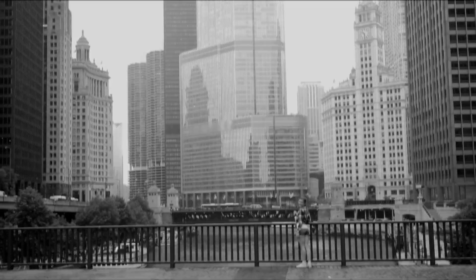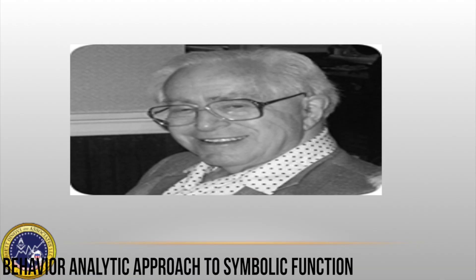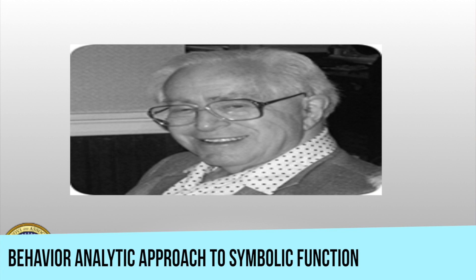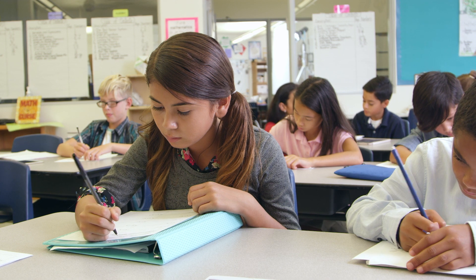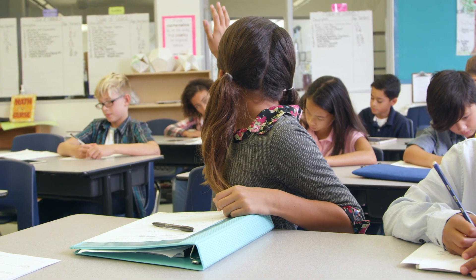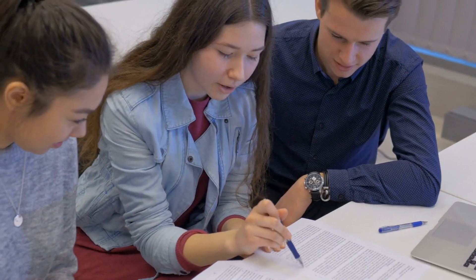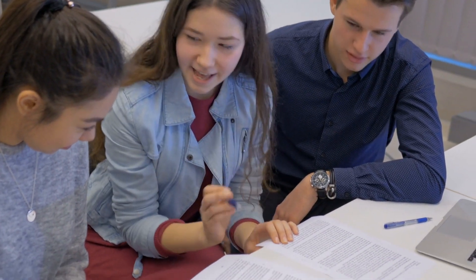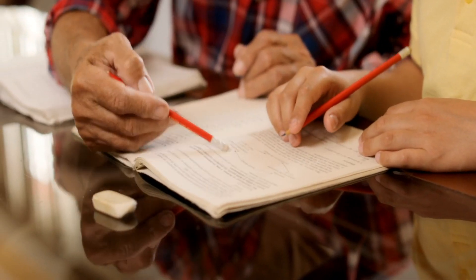Stimulus equivalence is nothing new in our field. It dates back to the work of Sidman in the 70s and, put very simply, is a behavior analytic approach to symbolic function. A common example is used with matching to sample procedures, where we teach necessary baseline skills that are then tested for emergent or untrained ones. After teaching two interrelated conditional discriminations, test trials are administered where there are no consequences for responding, which tests for emergent or derived relational responding.